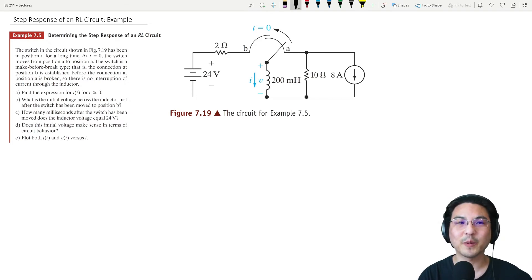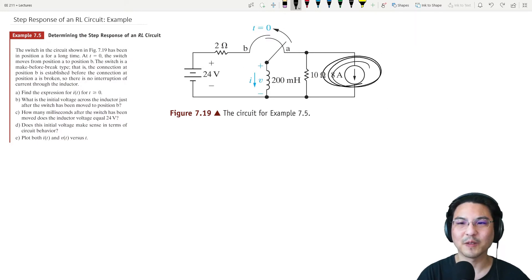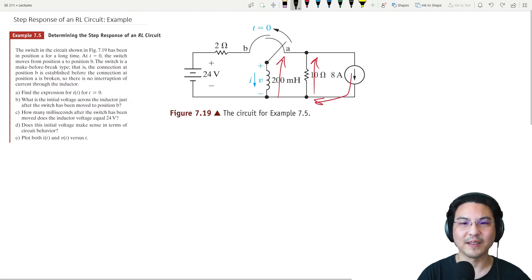Let's try an example of a step response for an RL circuit. If we have the switch here at position A for a long time, then the current from this source is flowing this way, and then goes here and here. If it's there for a long time, the current here is constant.